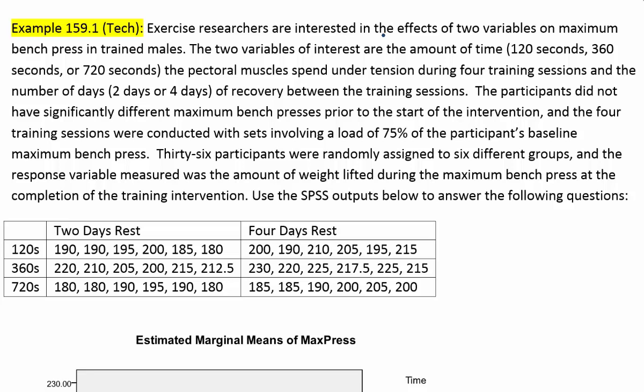Example 159.1. Exercise researchers are interested in the effects of two variables on maximum bench press in trained males. The two variables are the amount of time — 120 seconds, 360 seconds, or 720 seconds — the pectoral muscles spend under tension during four training sessions, and the number of days — two days or four days — of recovery between sessions. 36 participants were randomly assigned to six different groups, and the response variable was the amount of weight lifted during the maximum bench press at the completion of the training intervention.